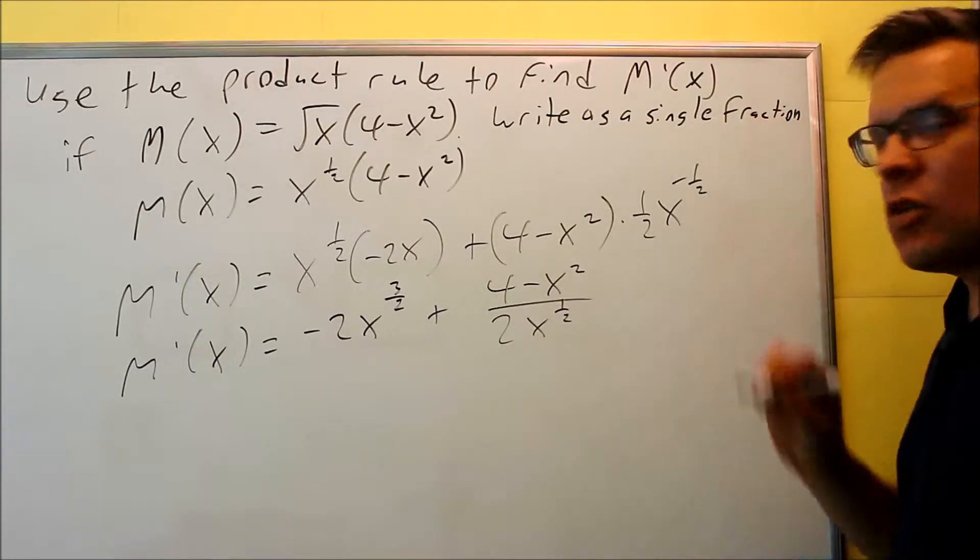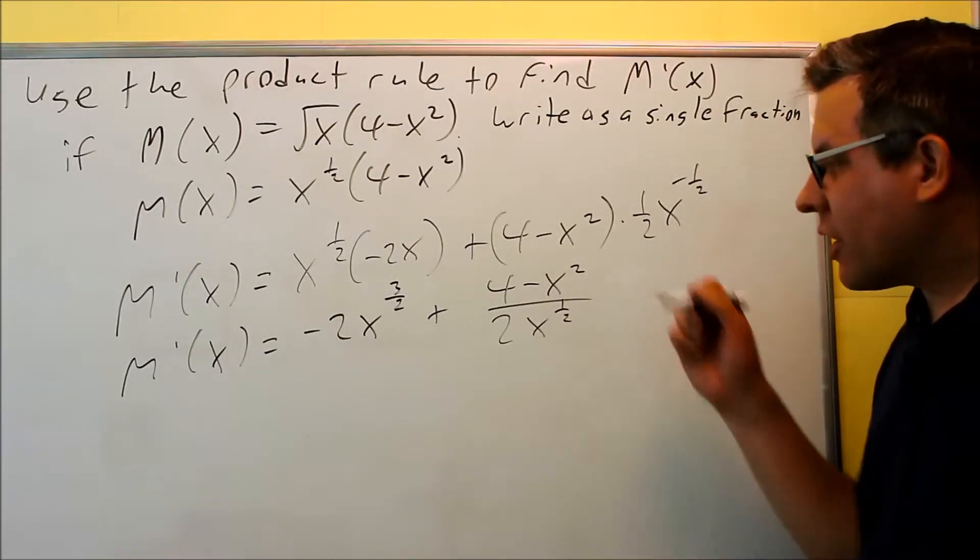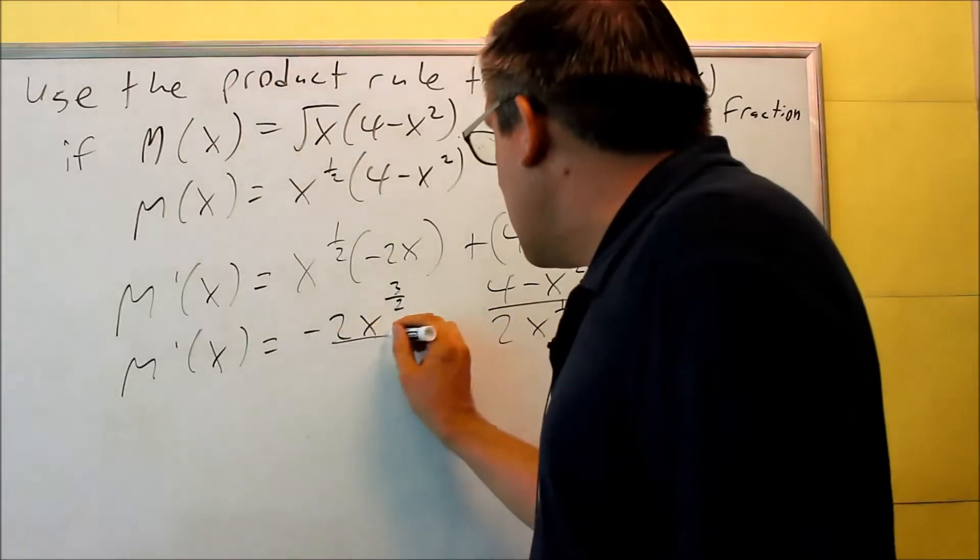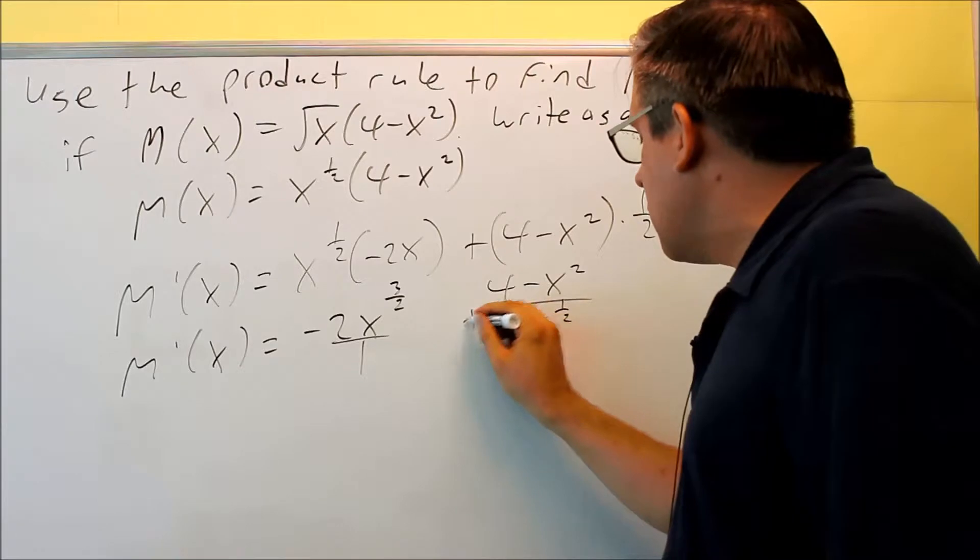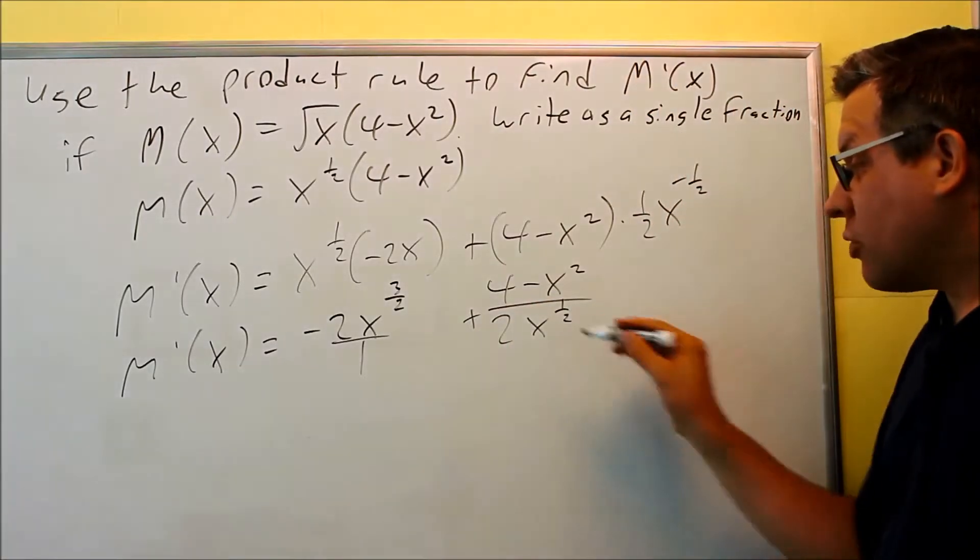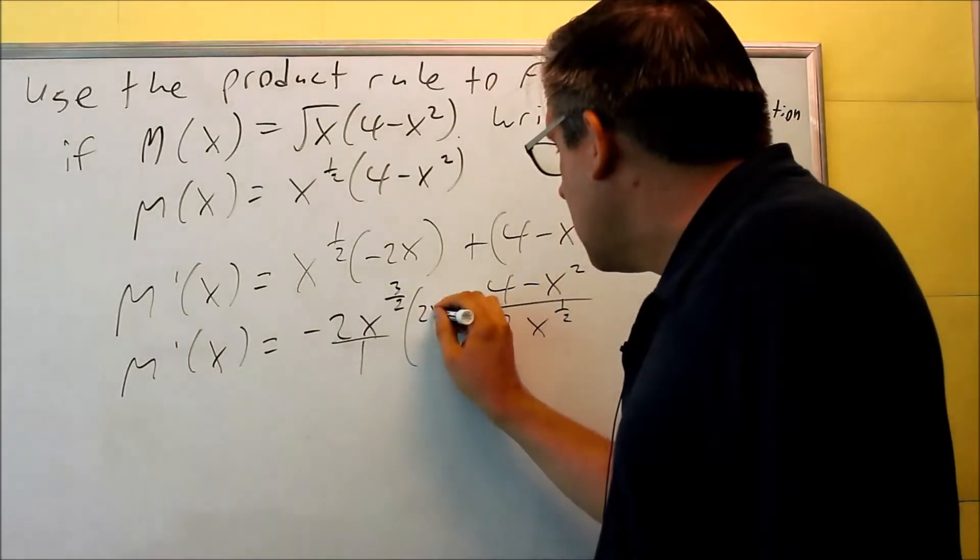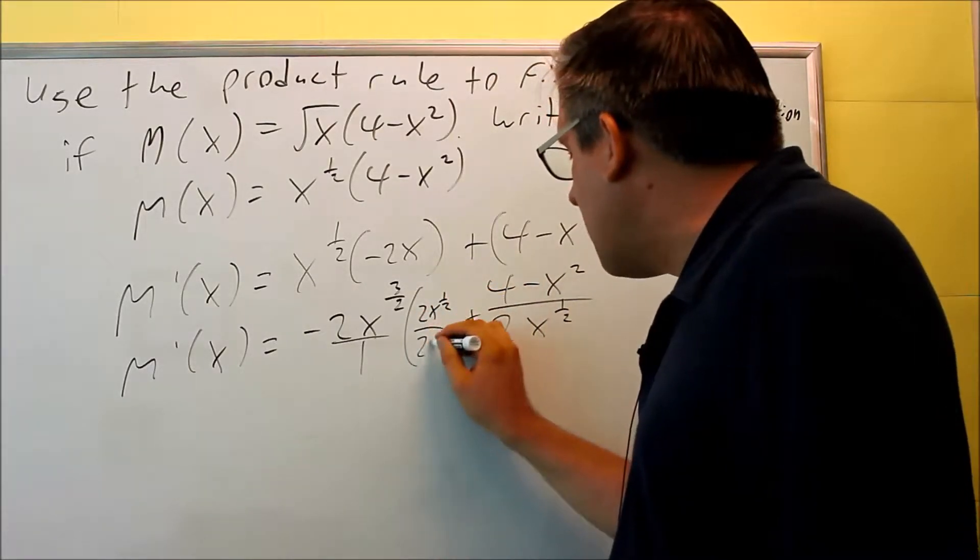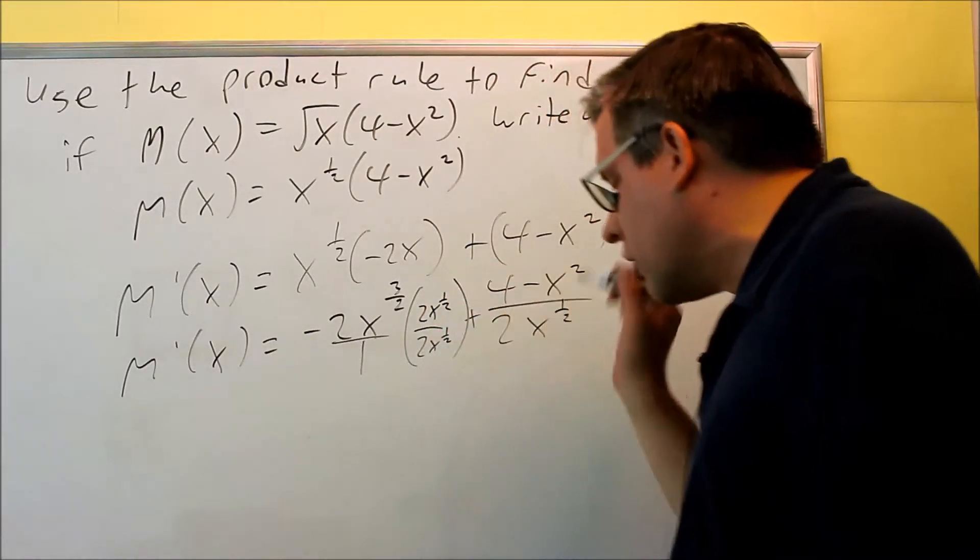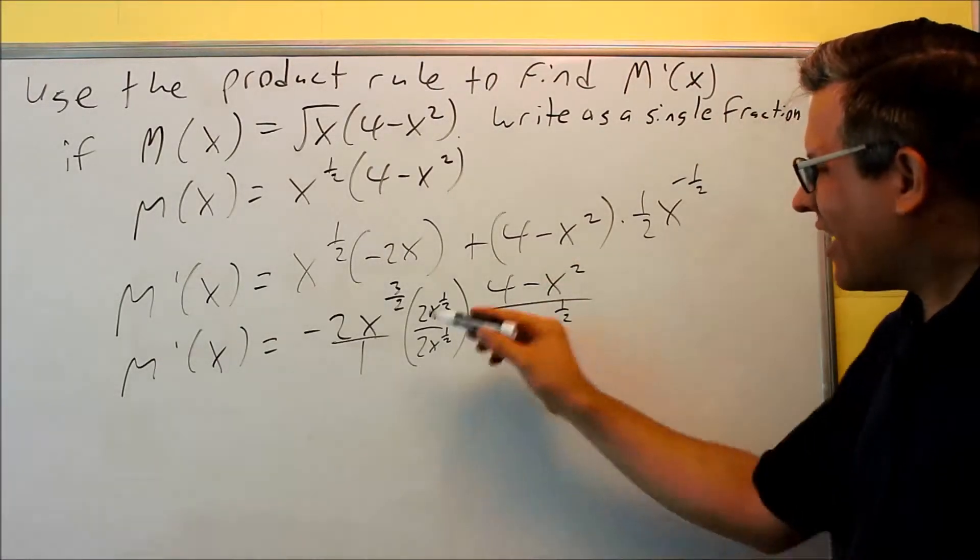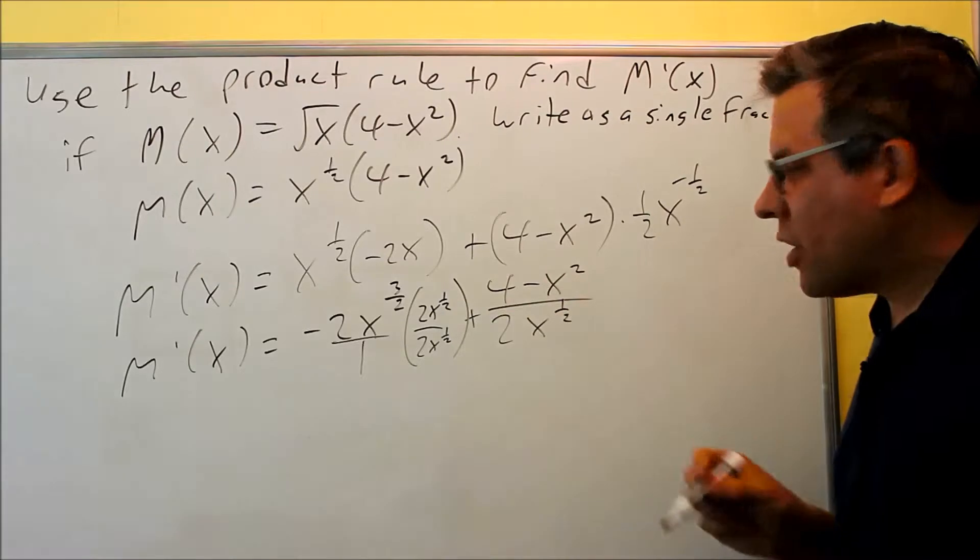It does say to write this as a single fraction, so I need to get common denominators here. So what will happen is I need to make both the bottoms equal to two x to the one-half, so I'll multiply this one by two x to the one-half top and bottom. So basically the calculus is over, we're just working now with some algebra to combine this together.